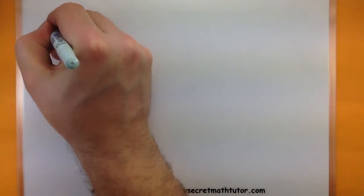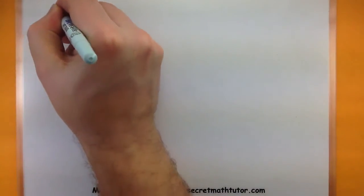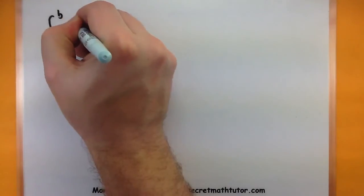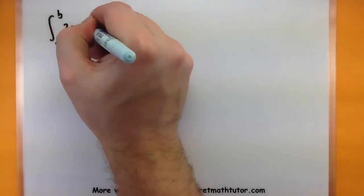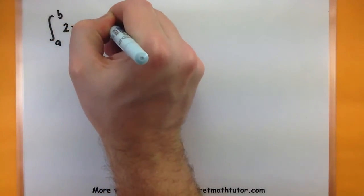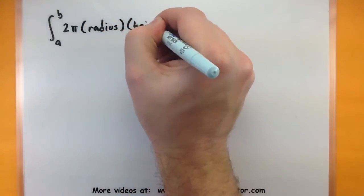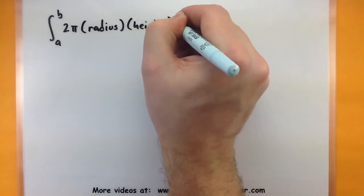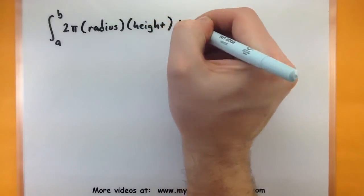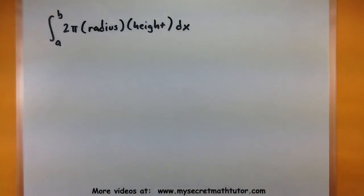So the general form for these things look like the integral from a to b, 2 pi times the radius times the height.